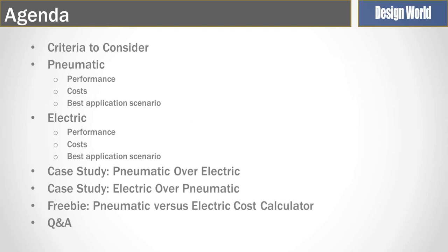Here is the structure. First, we'll look at the criteria used to evaluate pneumatic versus electric. Then we'll go into pneumatic — performance advantages and disadvantages, cost characteristics, and the best-case application scenarios. Similarly for electric. Then we'll look at a case study where pneumatic wins out over electric, and another where electric wins. And then we come to the freebie: the pneumatic versus electric cost calculator. Followed by questions and answers.